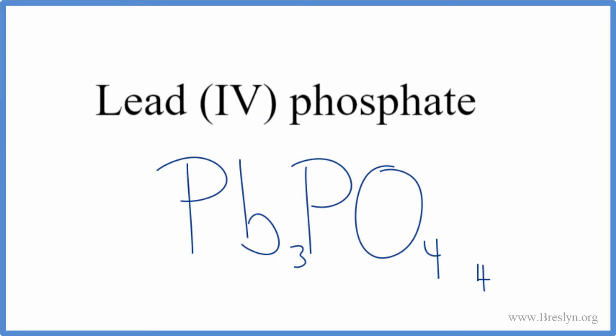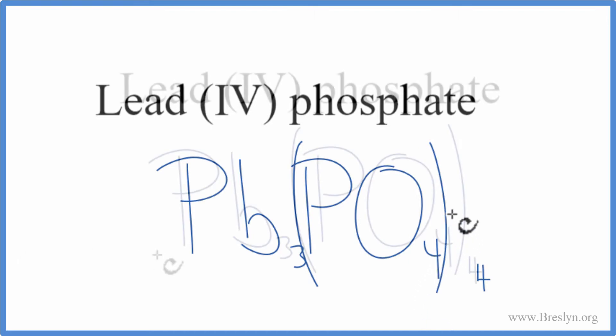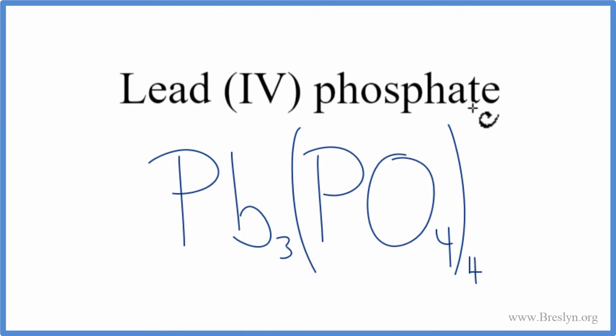Let's get rid of these. We do need to put parentheses around the phosphate, though, because it's a polyatomic ion, and we have four of them. So let's put parentheses around the phosphate. And this is the formula for lead four phosphate.